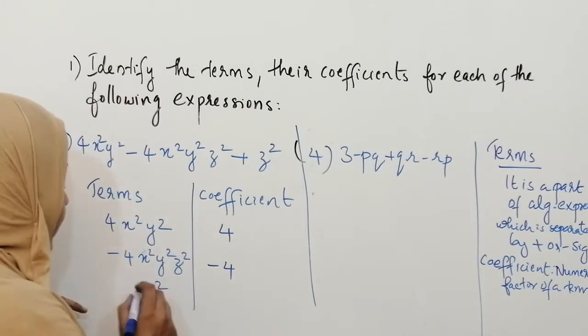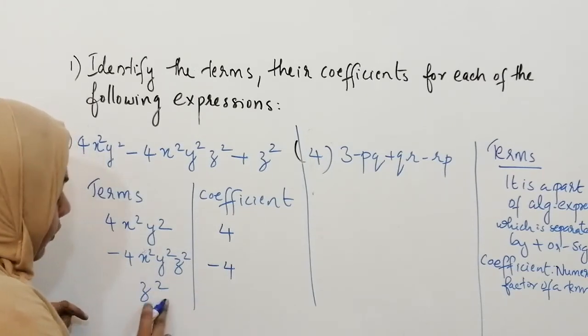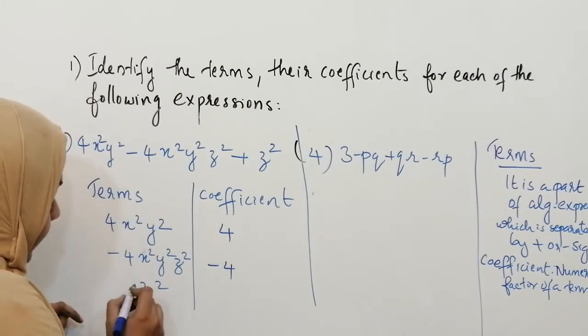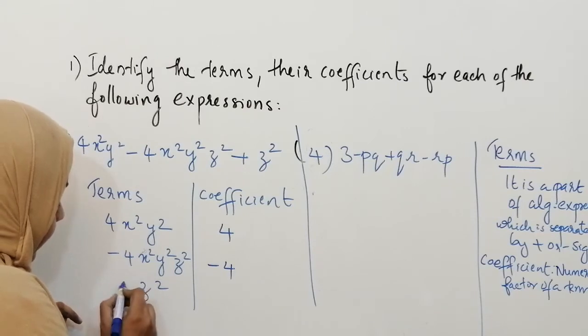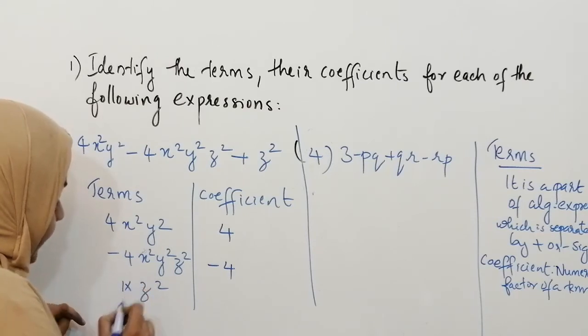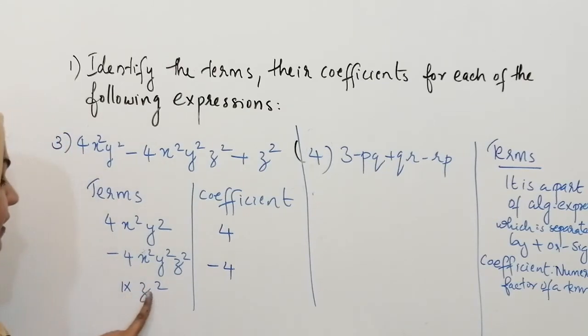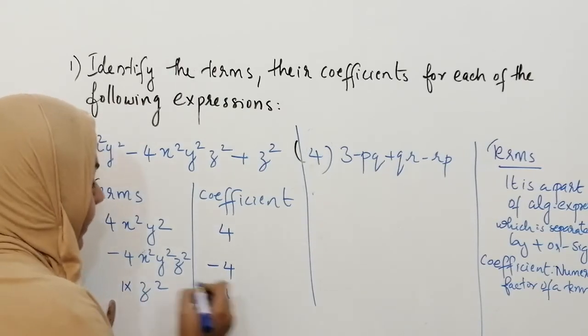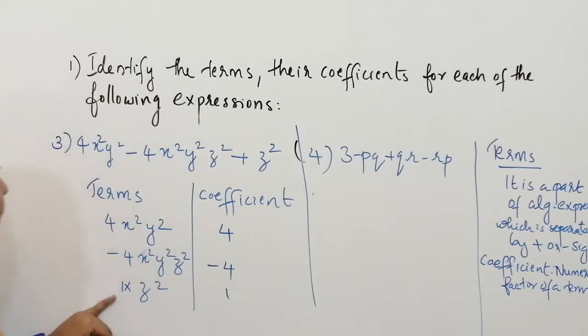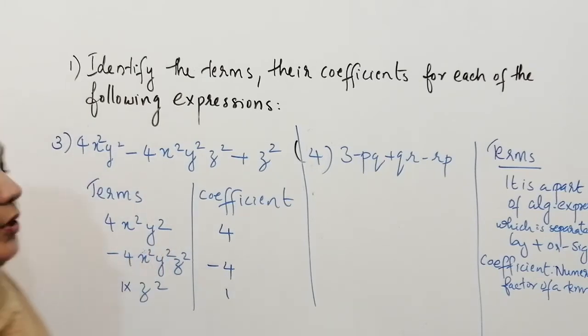The next term is z². What is the coefficient of z²? You know that z² means 1 into z², so the coefficient of z² is 1. So we have finished our third question.